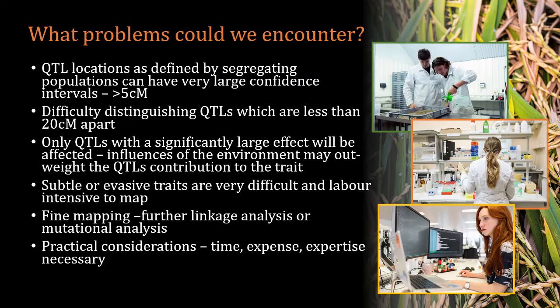We should now consider potential problems. QTL locations as defined by molecular markers in segregating populations can have really large confidence intervals — often more than 5 centimorgans and up to about 30. Considering a typical chromosome is 100 centimorgans, this can result in really large areas of the genome being implicated with the trait. Also, although having many molecular markers is crucial to accuracy, you cannot reduce the confidence interval by having more with closer spacing. The only way to reduce a confidence interval is to considerably increase the population size — due simply to a lack of recombination at meiosis.